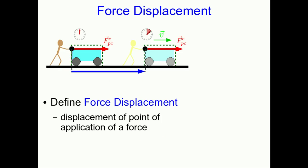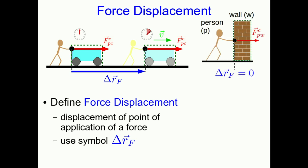The displacement of the point of application of the force is important to us in determining work, so we're going to give it a name. We'll call it the force displacement and use Δr_f to mean force displacement. In the case of the person pushing the cart, the force displacement was a non-zero vector, but in the case of the person pushing on the wall, the force displacement was zero — and that's why no work was done.